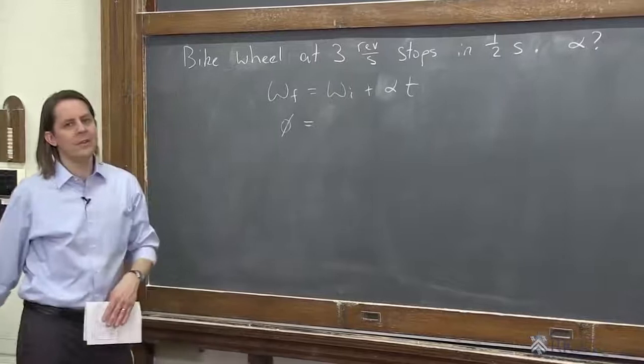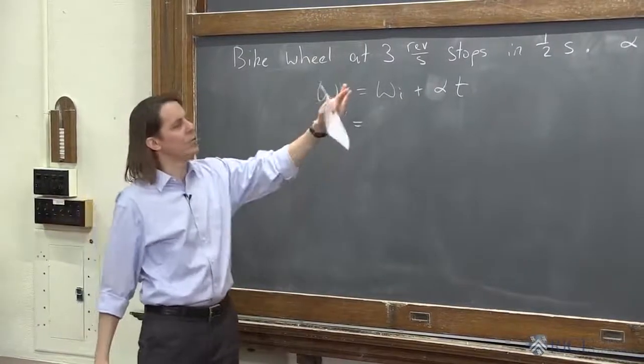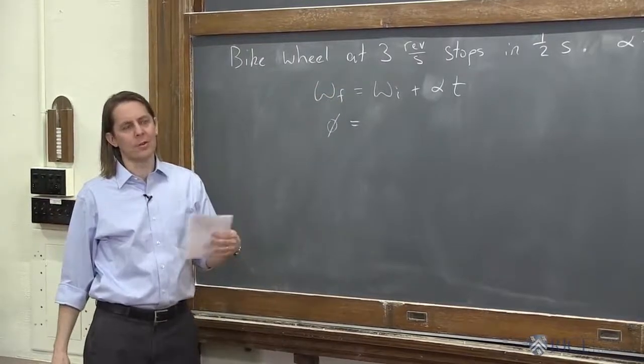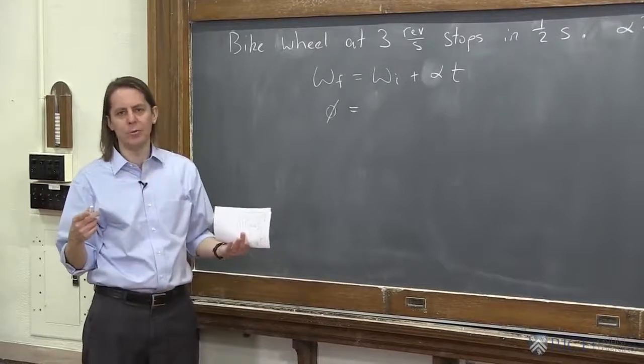The initial angular velocity, we need that in radians per second. So we've got to think. We were given this as three revolutions per second. We've just got to convert that. It's just three times a round, but each time around is 2π. So it's just 3 times 2π.